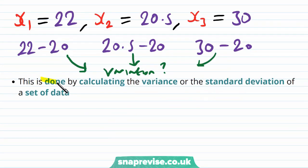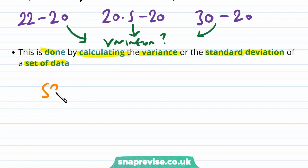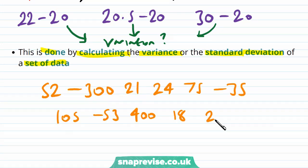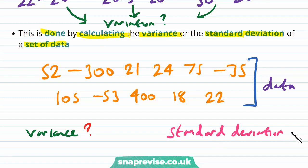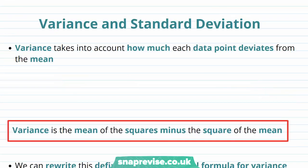This is done by calculating the variance or the standard deviation of a set of data. Given some data — 52, -300, all the way up to 22, as we had before — we'd like to calculate the variance and the standard deviation in order to find how much the data varies from the mean.